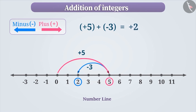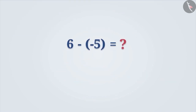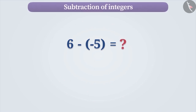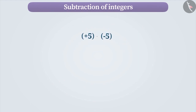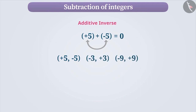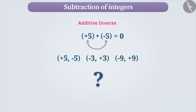Now let's learn how subtraction of integers is done. Before doing so, we need to understand one thing. If the sum of two numbers is 0, then they are additive inverses of each other. For example, plus 5 and minus 5, plus 3 and minus 3, plus 9 and minus 9, etc. Additive inverse of any number is obtained by writing it with the opposite sign.